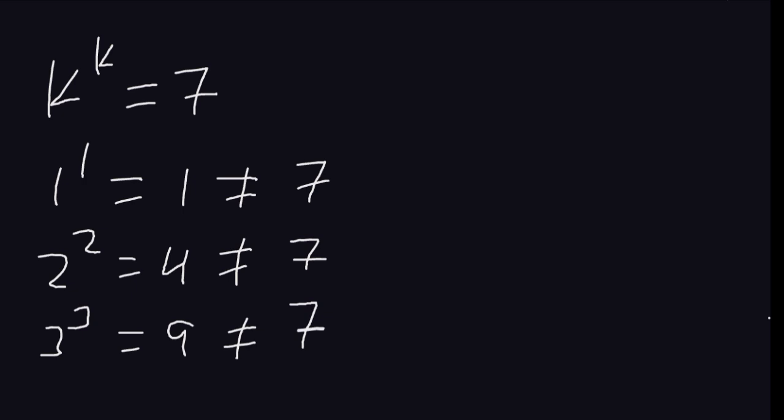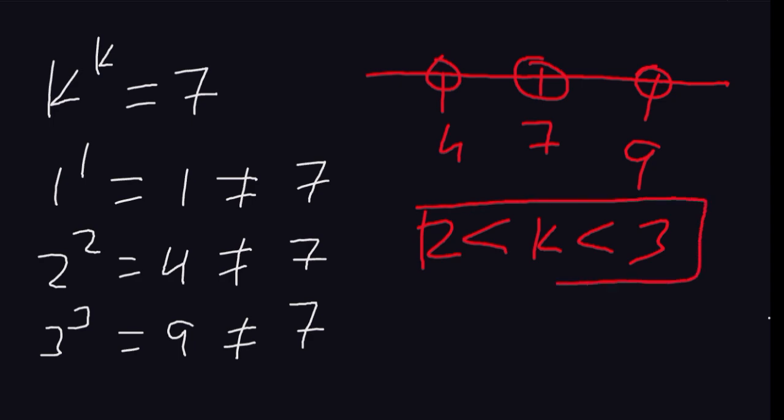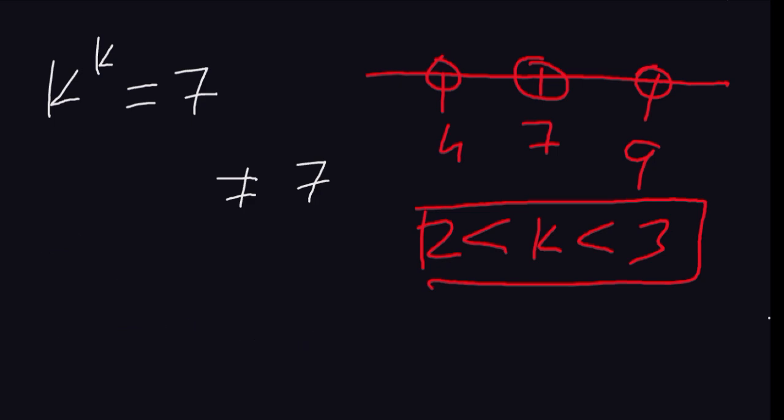But you notice that 7 lies between these values. If we have a number line like this one, we can have 7 here, then 4 and 9. So 7 is between 4 and 9, meaning that the value of k will be greater than 2 but less than 3. The value of k must lie in this boundary.